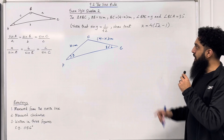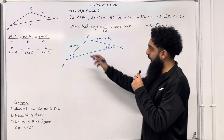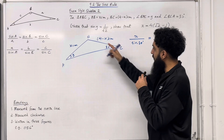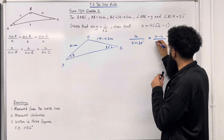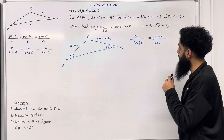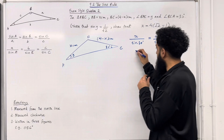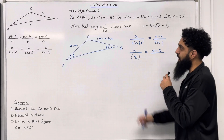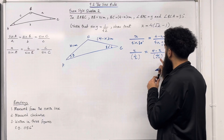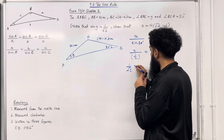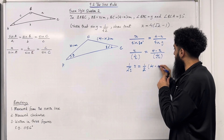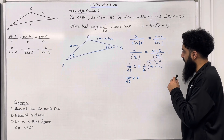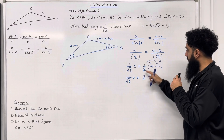We can apply the sine rule to get: x over sin 30 degrees equals 4 minus x over sin y degrees. Now sin 30 has the exact value of one half, so we have x over one half equals 4 minus x over 1 over root 2. Cross-multiplying gives 1 over root 2 times x equals one half multiplied by 4 minus x. Expanding the brackets: one half times 4 is 2, minus one half times x, which is one half x.